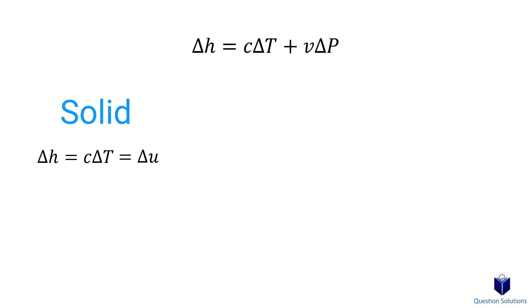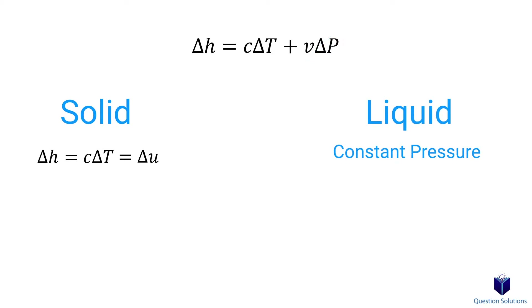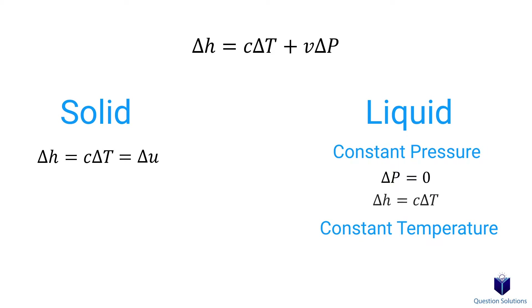If the substance is a liquid, then it's dependent on whether it's a constant pressure process or a constant temperature process. If it's constant pressure, then delta P is zero, so you end up with the same thing as the solid substance version. If it's a constant temperature process, then delta T is zero, in which case you end up with just the specific volume times delta pressure term.